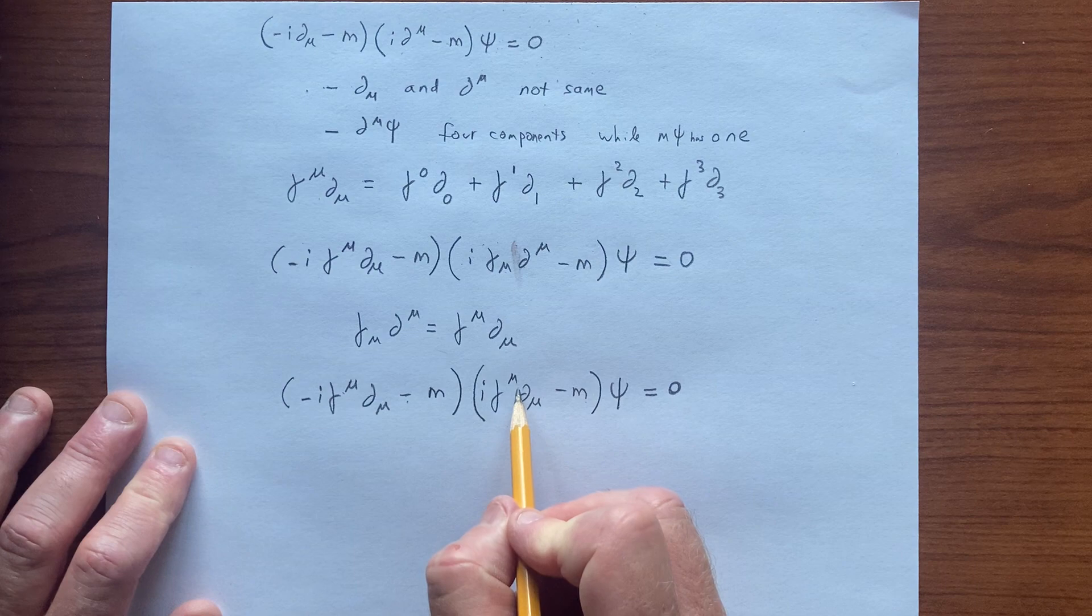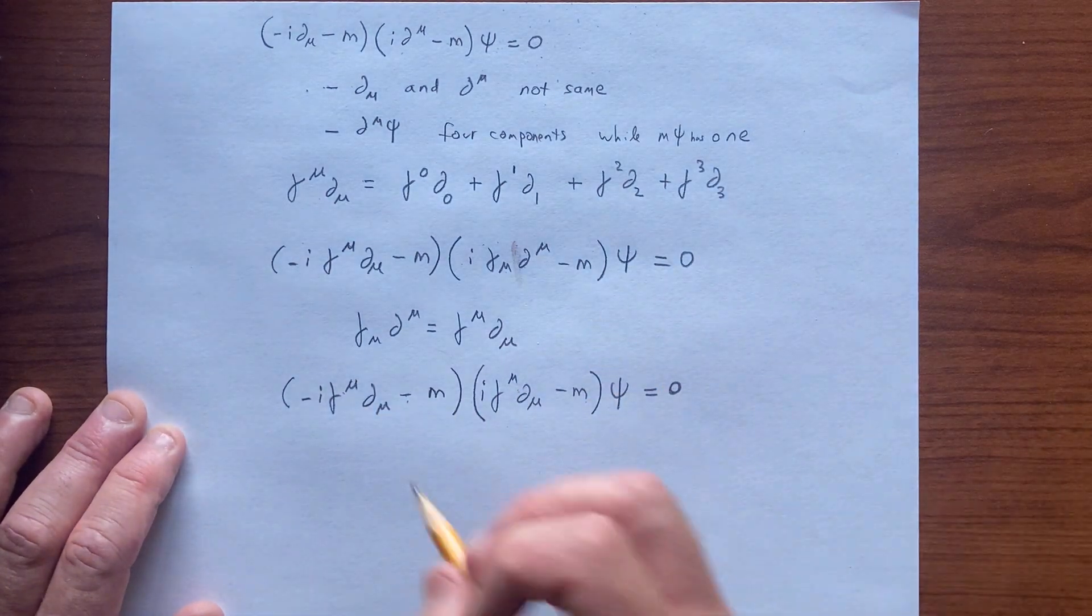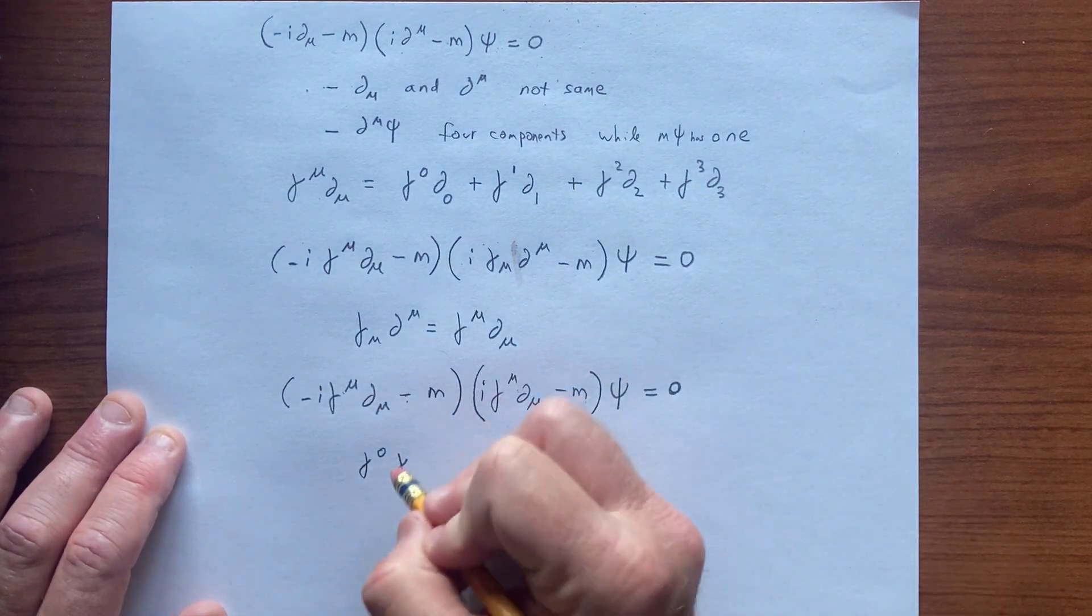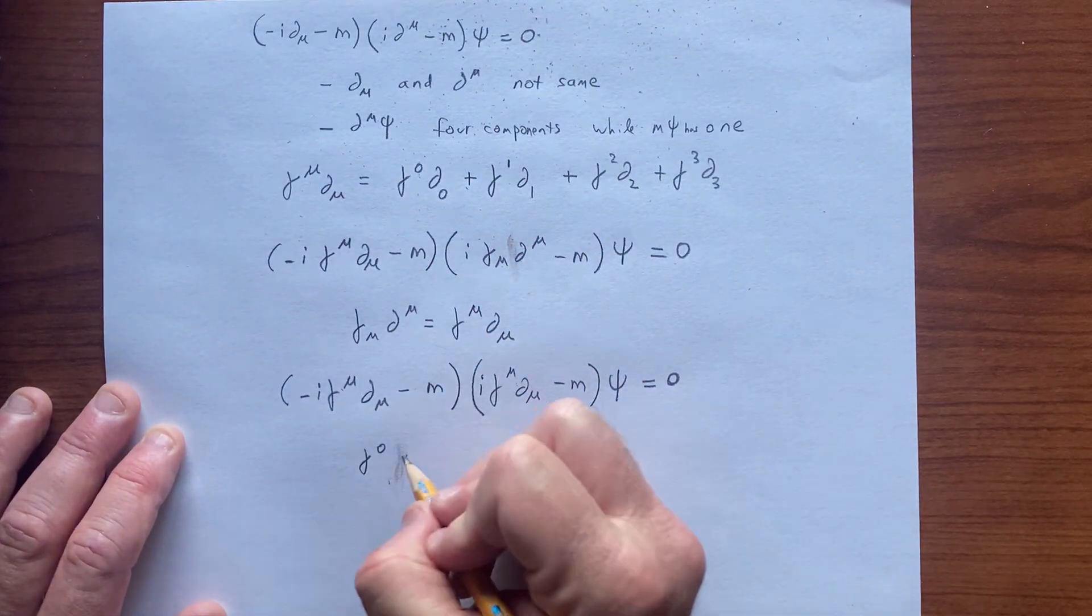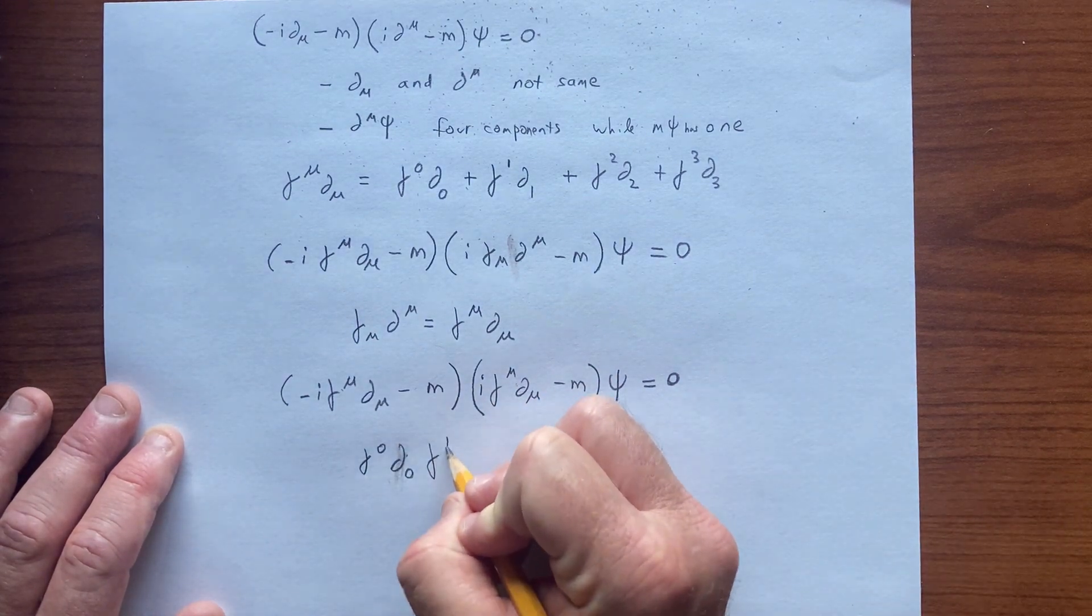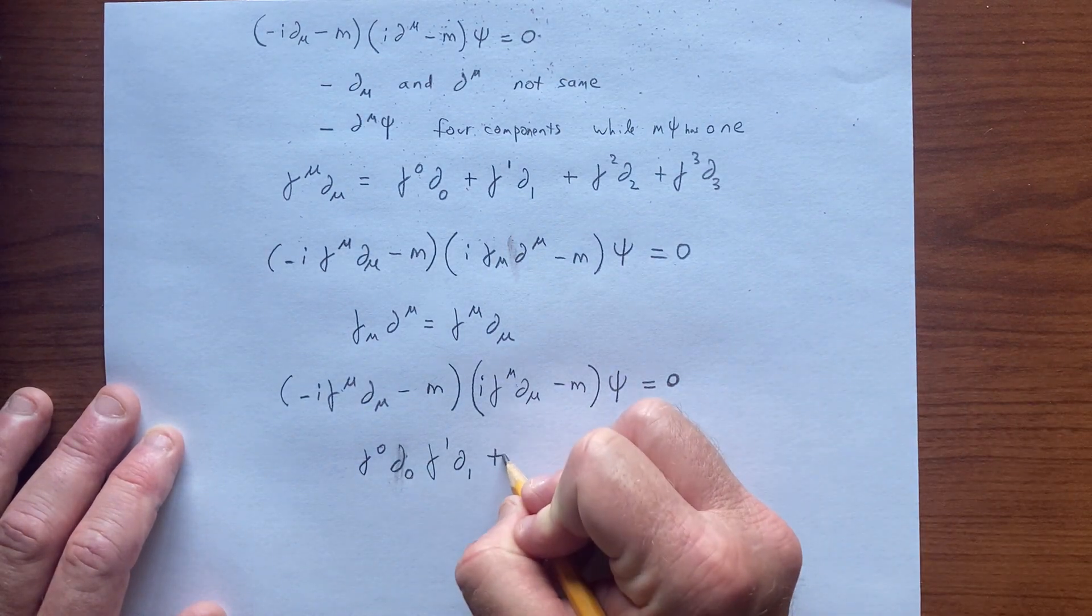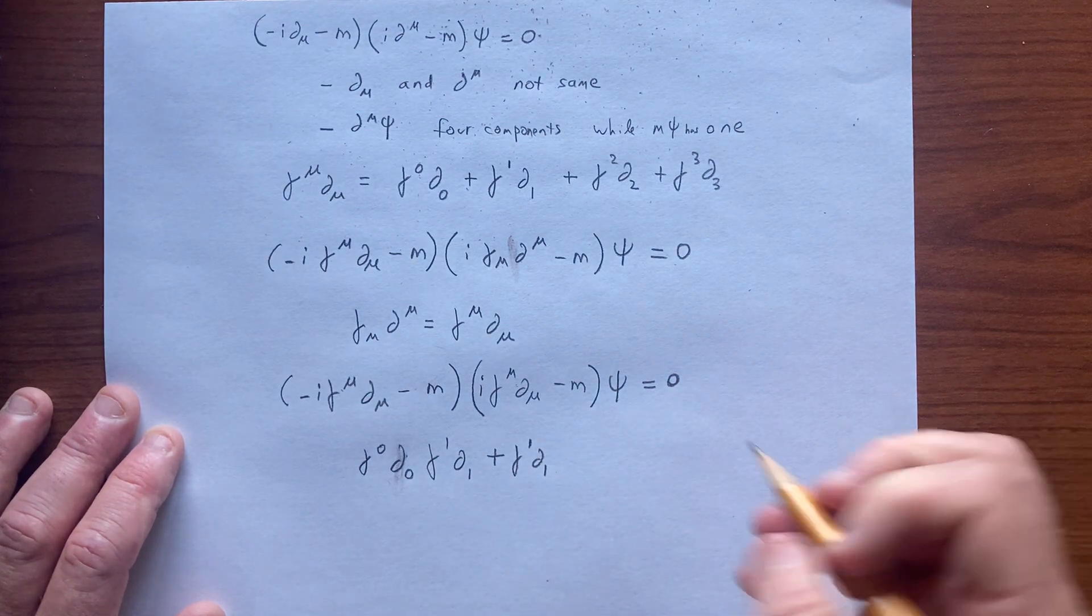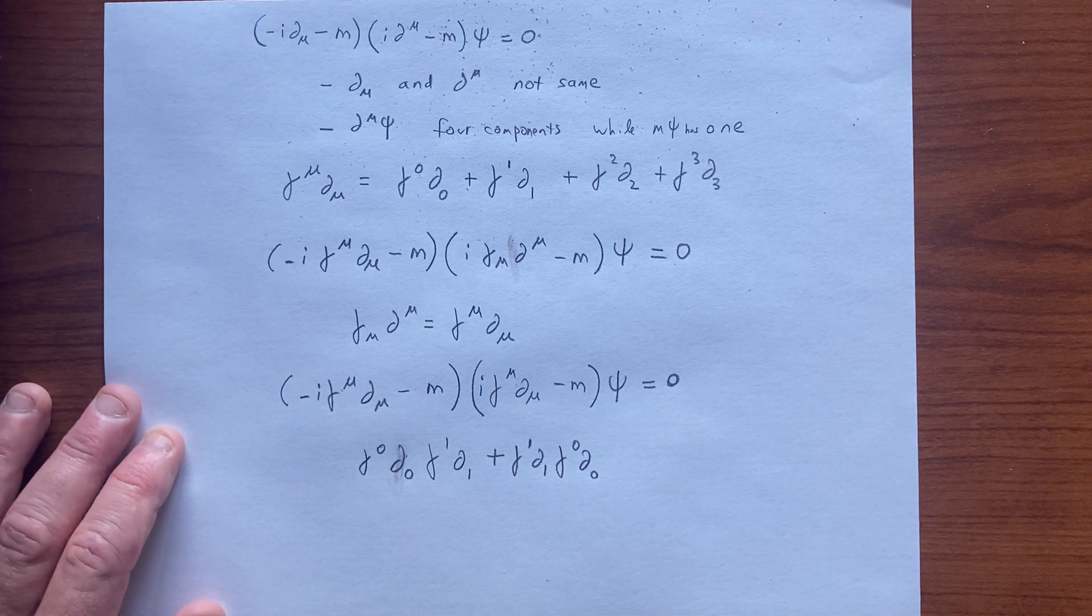This times this term will bring in cross terms. We will have terms like gamma^0 d/d0, d by d1 gamma^1, plus gamma^1 d/d1, gamma^0 d/d0.